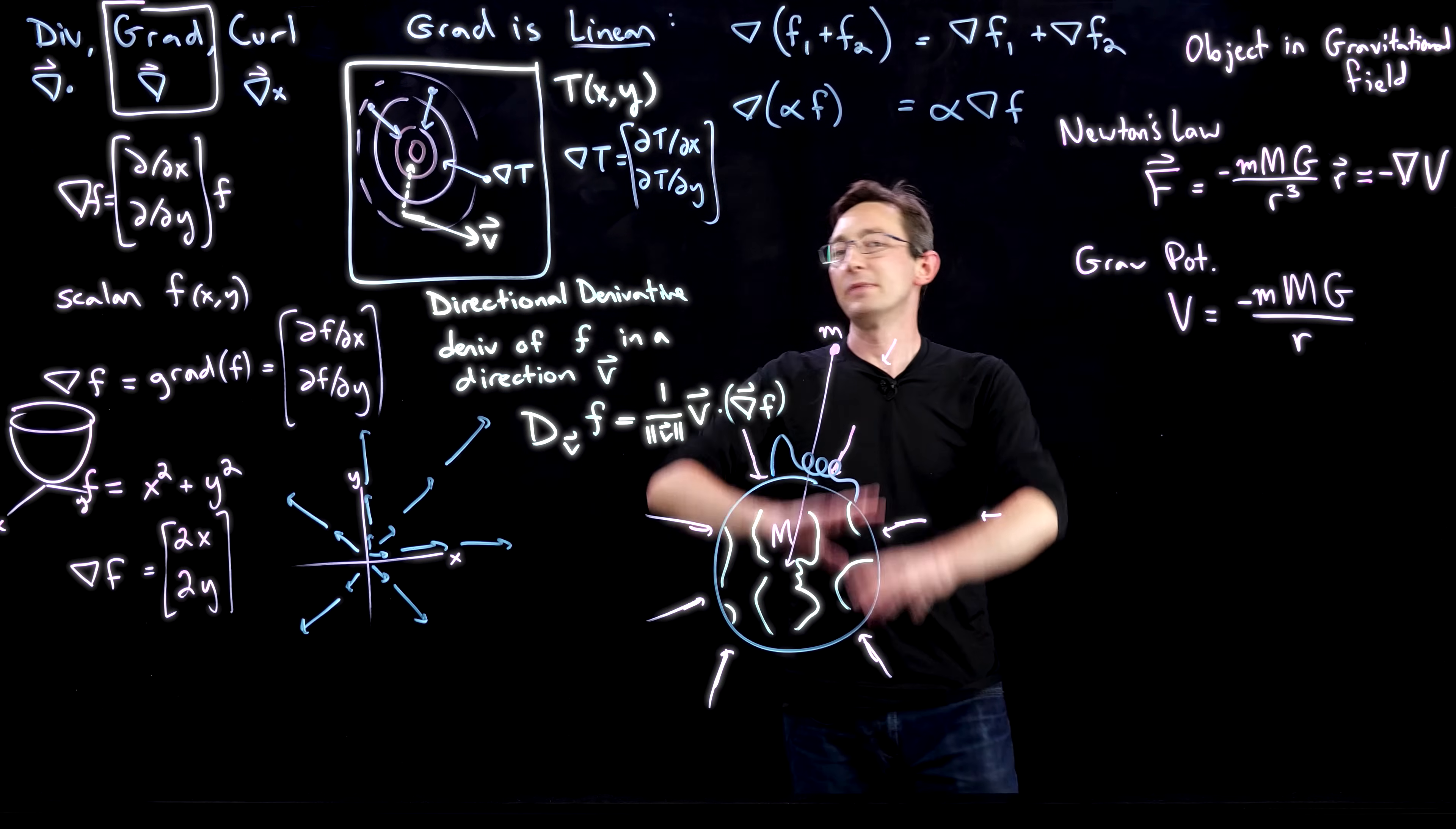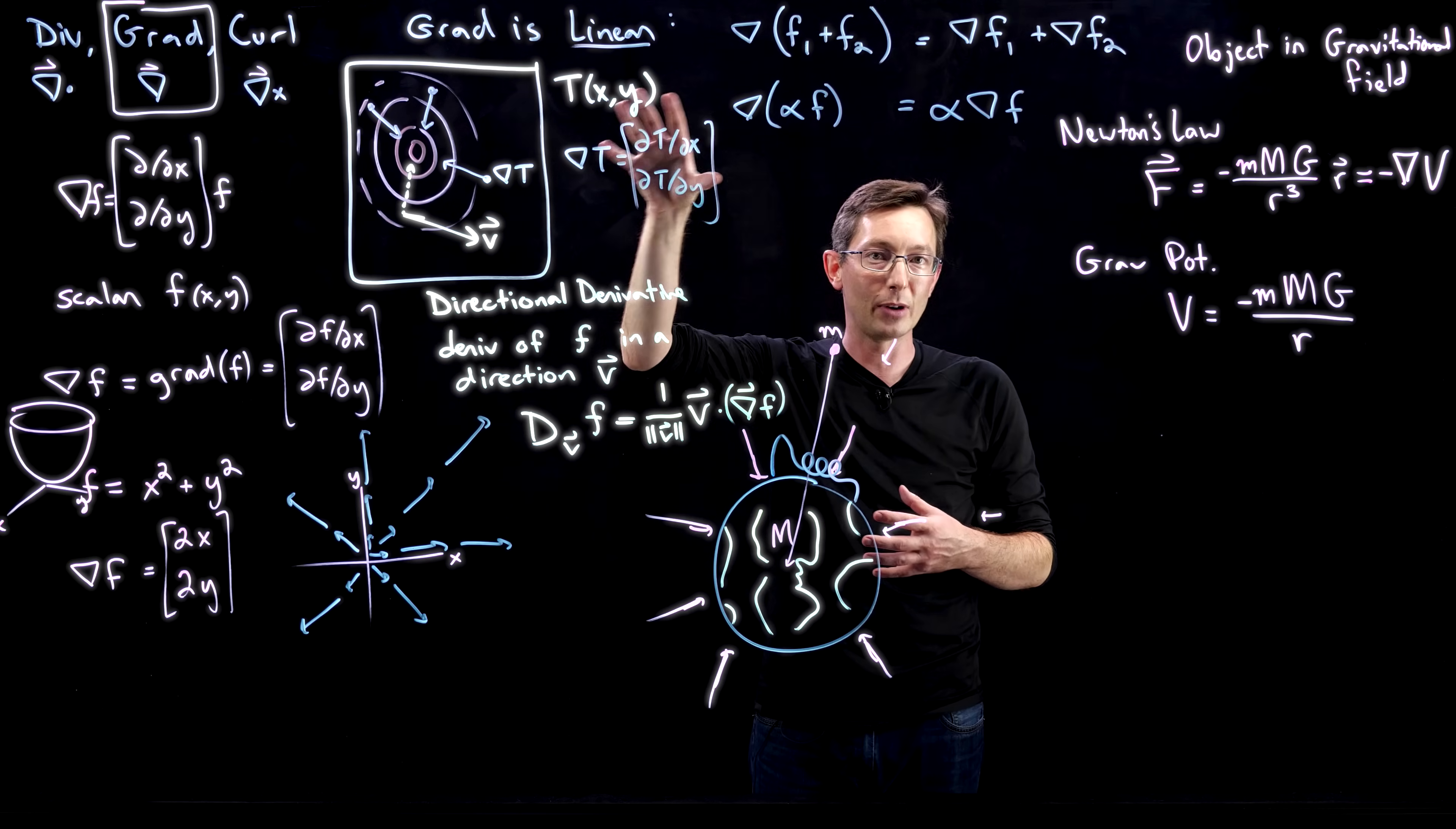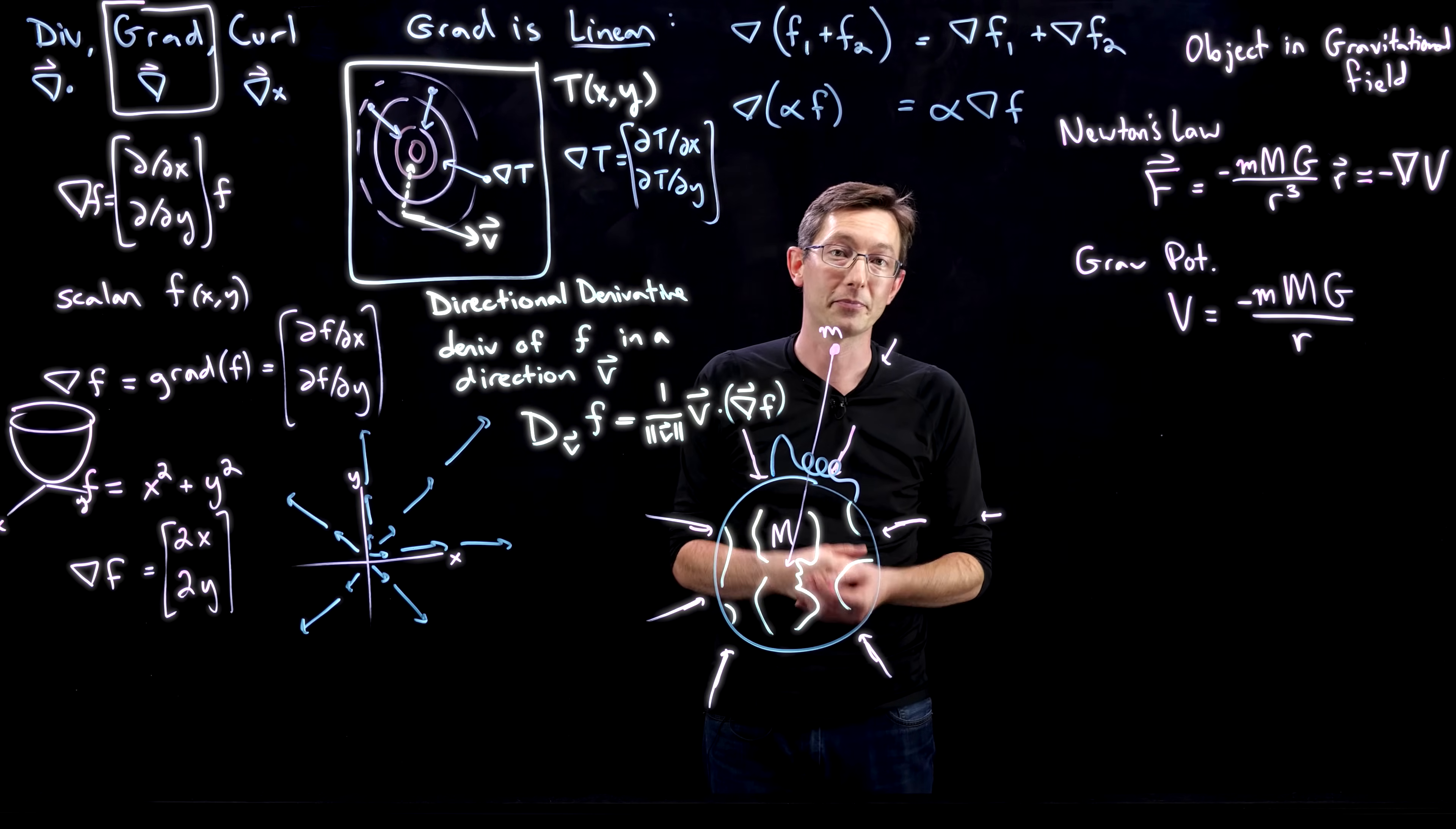This is the gradient. We're going to do the same thing for div and curl, and then we're going to start putting these objects together and showing how these partial derivatives and these operators are the building blocks of vector calculus, conservation laws, and partial differential equations. All right, thank you.